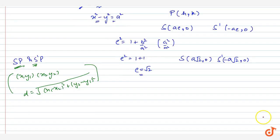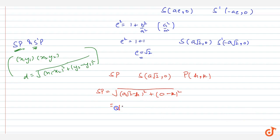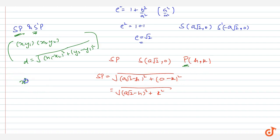Applying the distance formula for SP: the coordinates of S are (a√2, 0) and coordinates of P are (h, k). So SP = √[(a√2 − h)² + (0 − k)²], which becomes √[(a√2 − h)² + k²].